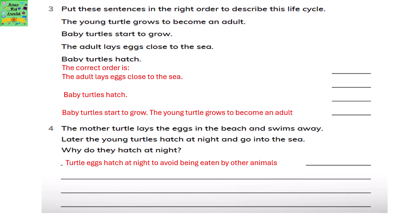Put these sentences in the right order to describe this life cycle. The correct order is: the adult lays eggs close to the sea; baby turtles hatch; then the baby turtles start to grow; the young turtle grows to become an adult.